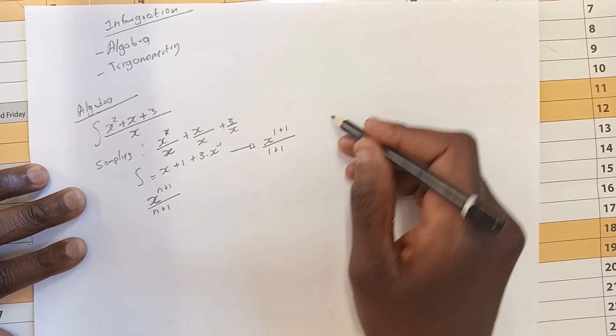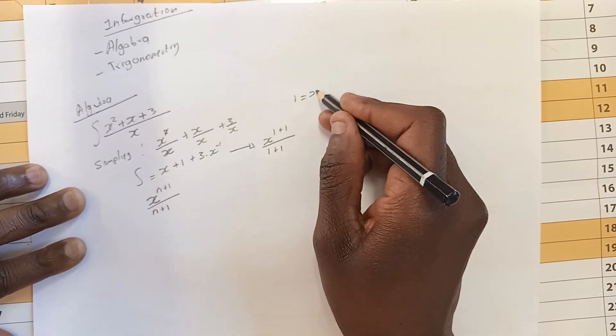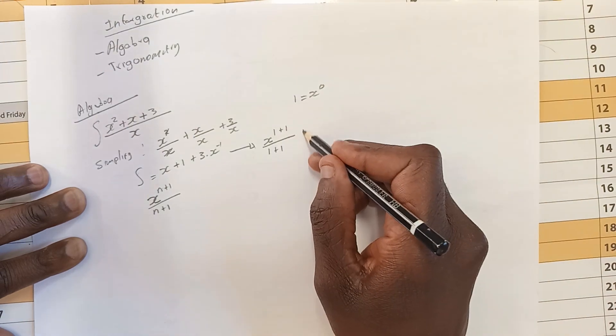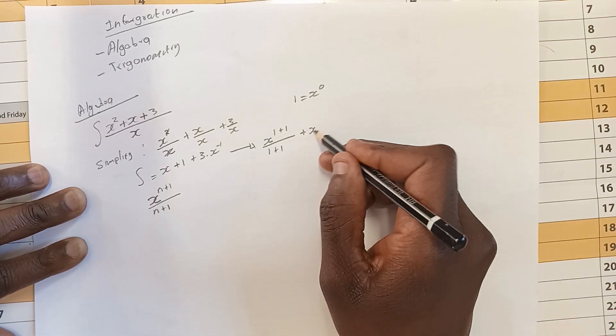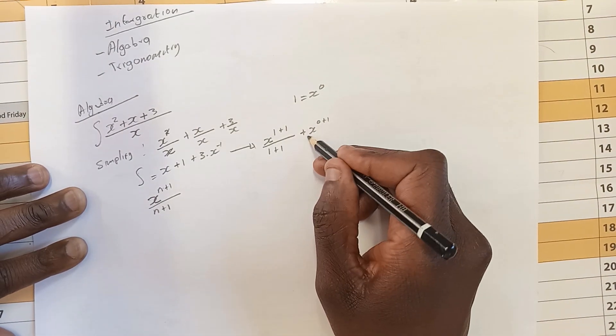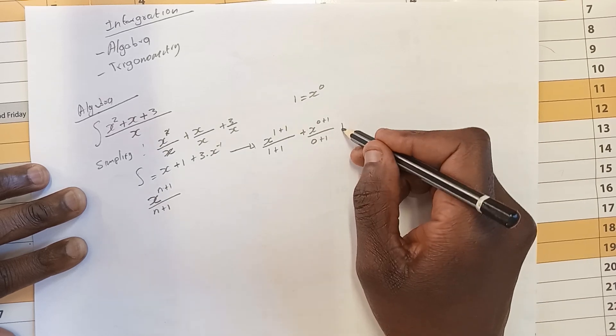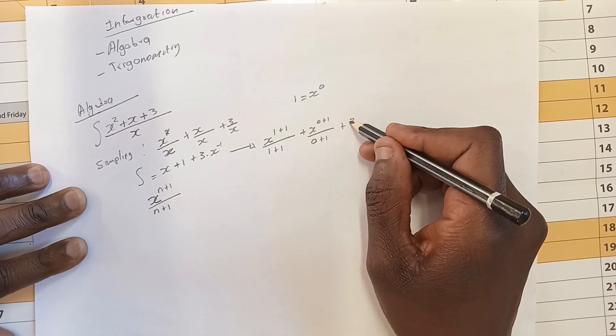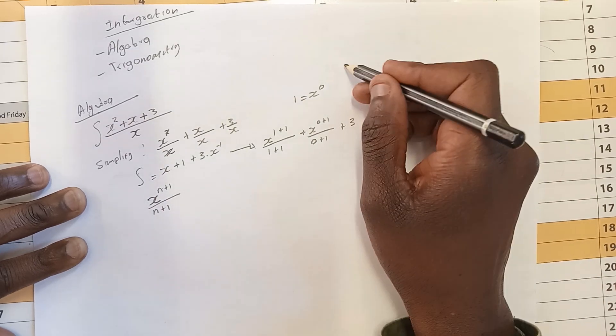Then we come here. Here we are having 1. 1 can be written as x to the exponent 0. So we are saying x to the exponent 0 plus 1 divided by 0 plus 1. So we come here. This is 3 x to the exponent 1.